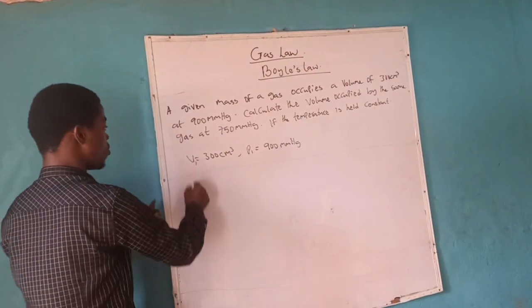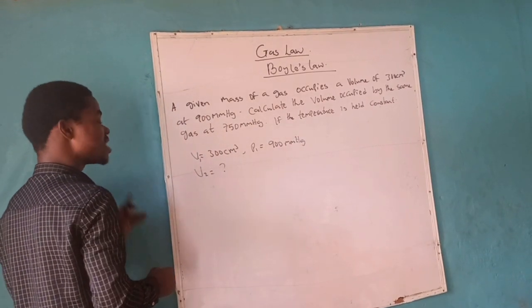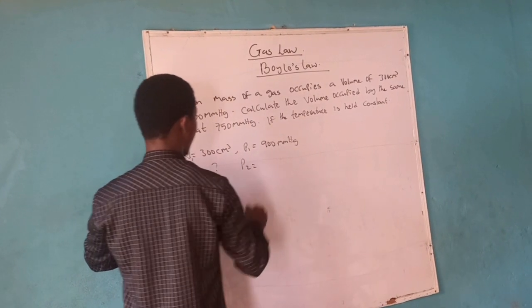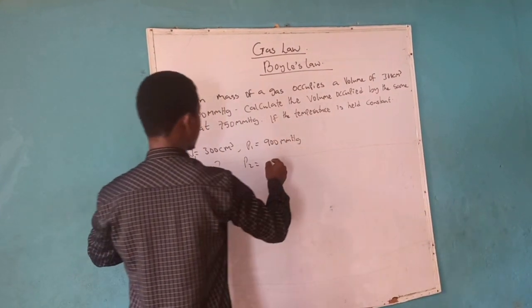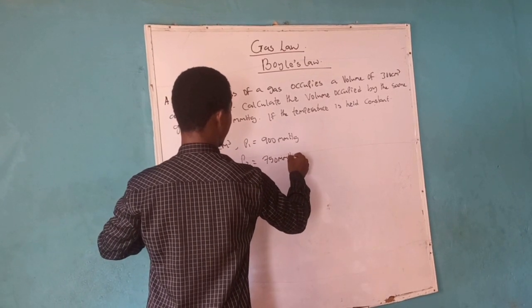Calculate the volume by the same gas when the pressure of the gas has been reduced to 750 millimeter mercury.